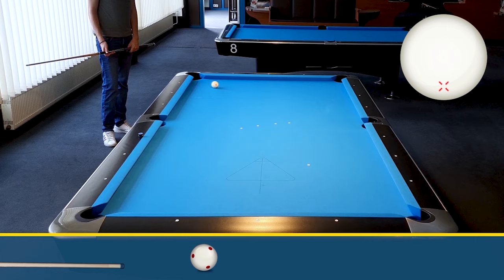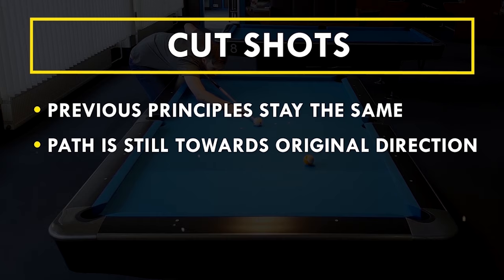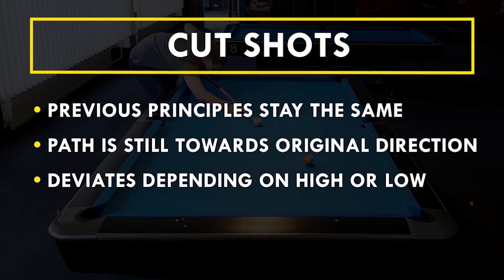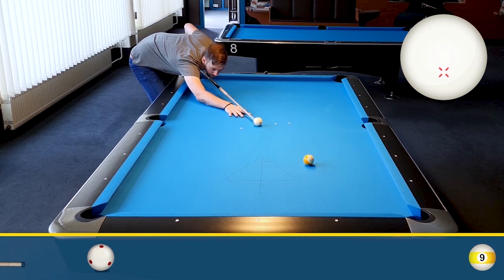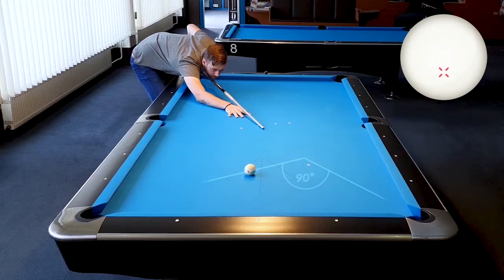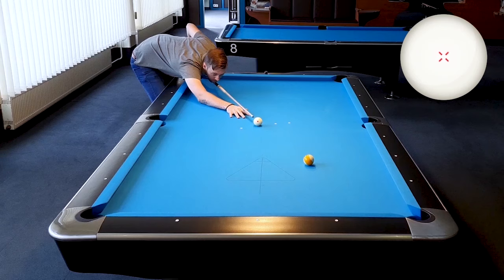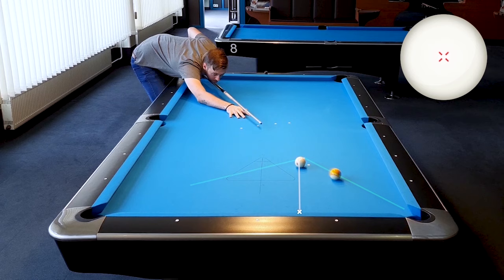Now let's have a look at different cut shots. When cutting a ball the principles stay the same — the cue ball still wants to go towards the direction that you're shooting to. However, it will tend to deviate more or less depending on how much high or low you're hitting. Let's look at a cut shot with a small angle first. The original path is towards this direction. Starting with a stop shot — that means we ensure that after impact there is no rotation on the cue ball — the cue ball will just move straight along the tangent line. With a rolling cue ball, the cue ball starts following the tangent line for a very short time, then as long as the forward rotation is present it wants to leave the tangent line towards its original direction. When the rotation is lost, the cue ball rolls towards the current direction.